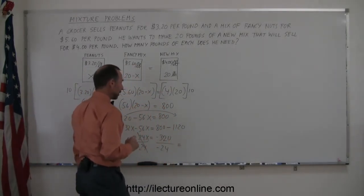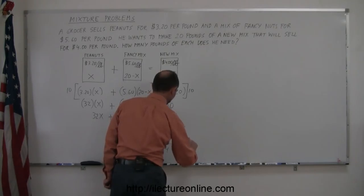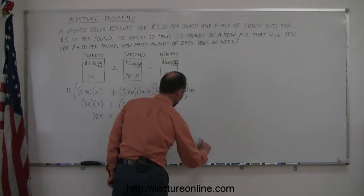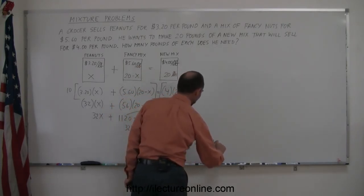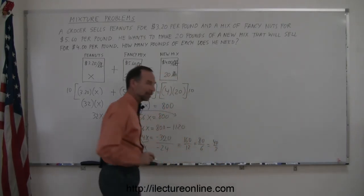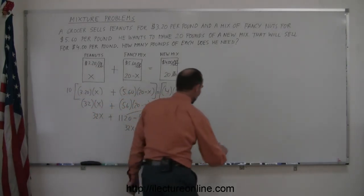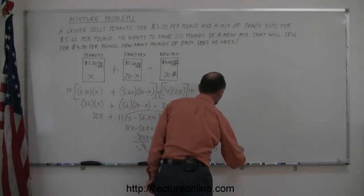320 divided by 24. How about dividing both sides by 2, that gives us 160 over 12. Divide both sides by 2 again, that gives me 80 over 6. Divide both sides by 2 again, that gives me 40 over 3. And 40 cannot be divided by 3, so 40 divided by 3 would be 13 and a third.